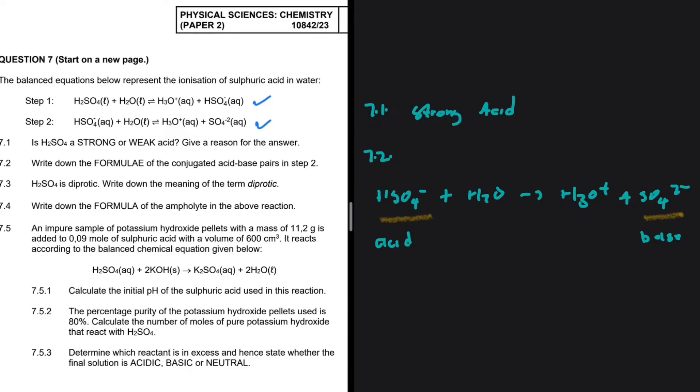And then on the other hand, H2O will be our base as it accepts a proton to become H3O plus. So this is a conjugate acid. It's the ion formed after a base accepts a proton. So our acid-base conjugate pairs.